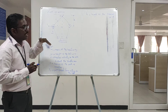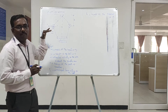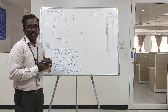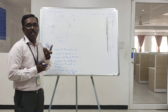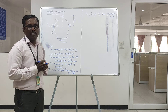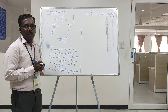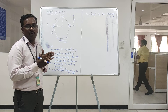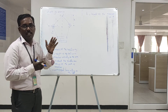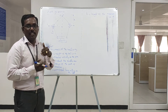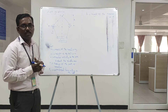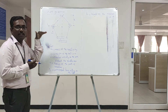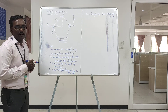Before we get into that, what is the function of governor? The function of governor is to regulate the speed when there is fluctuation in the load. So there are basically two types of governor: one is centrifugal governor and the inertial governor. The Watt governor comes into the category of centrifugal governor.